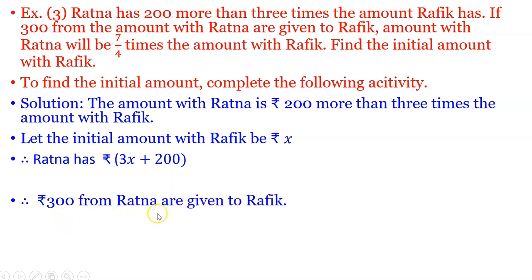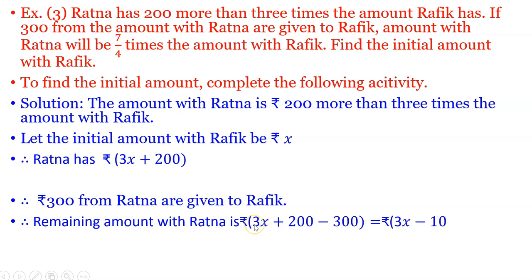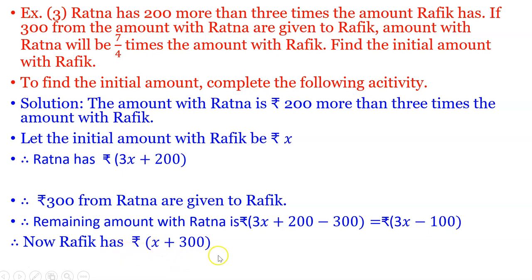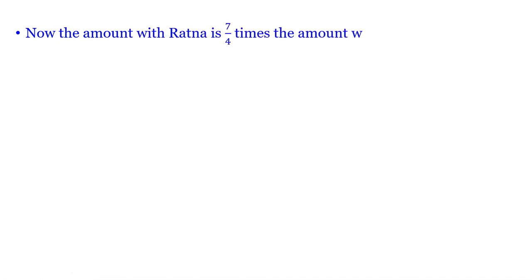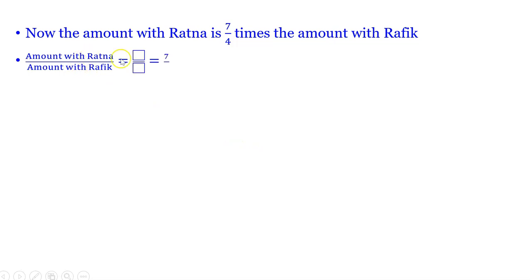Rs.300 from Ratna are given to Rafiq. Therefore the remaining amount with Ratna is 3x plus 200 minus 300, which becomes 3x minus 100. Rafiq now has x plus 300. By the given condition, the amount with Ratna upon amount with Rafiq is equal to 7 by 4. Substituting: (3x minus 100) upon (x plus 300) is equal to 7 upon 4.